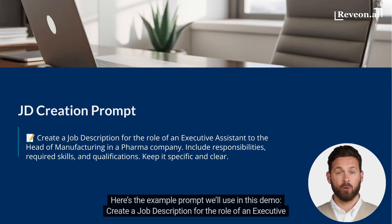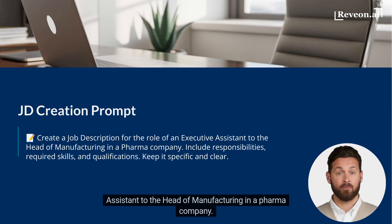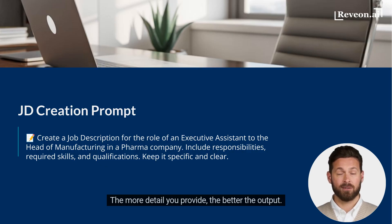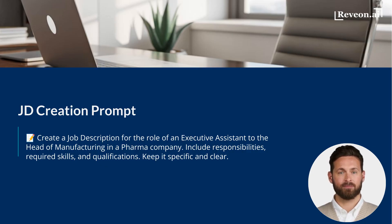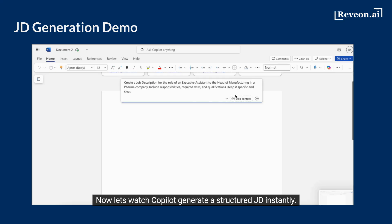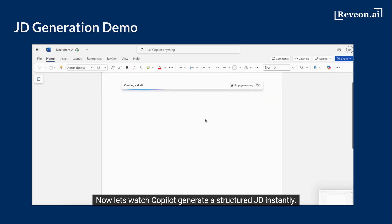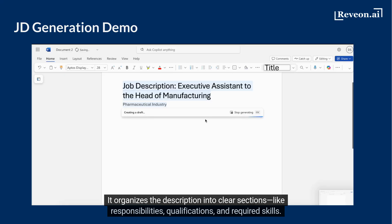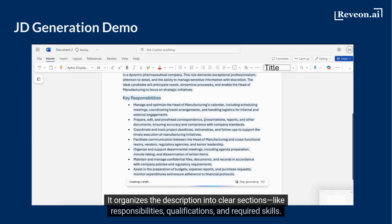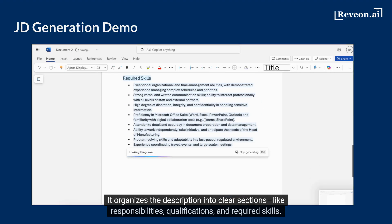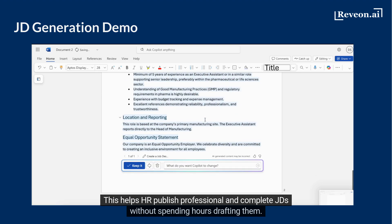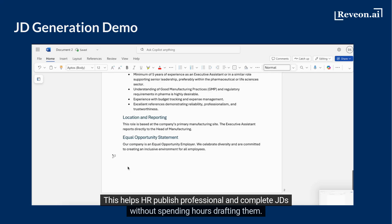Here's the example prompt we'll use in this demo: Create a job description for the role of an executive assistant to the head of manufacturing in a pharma company. The more detail you provide, the better the output. Now let's watch Copilot generate a structured JD instantly. It organises the description into clear sections like responsibilities, qualifications, and required skills. This helps HR publish professional and complete JDs without spending hours drafting them.